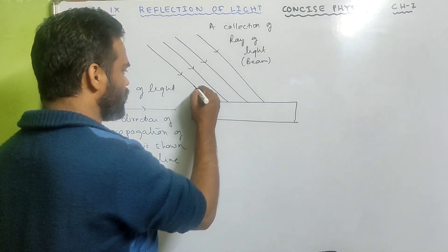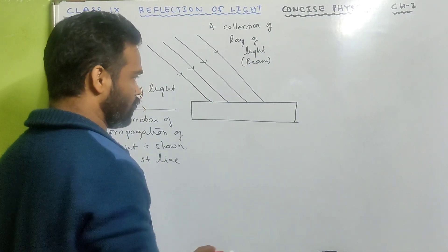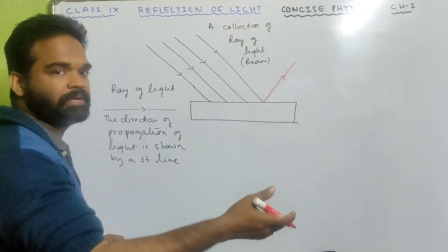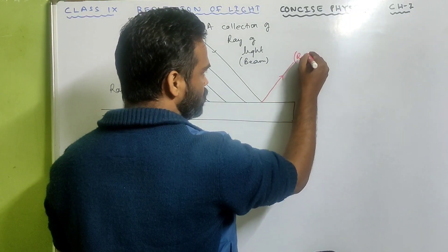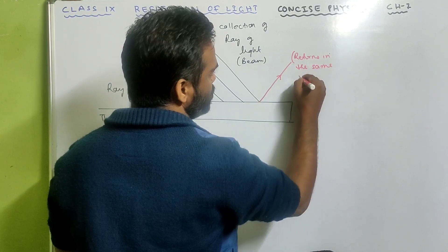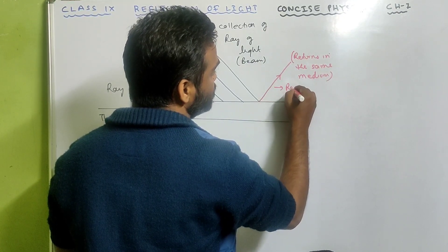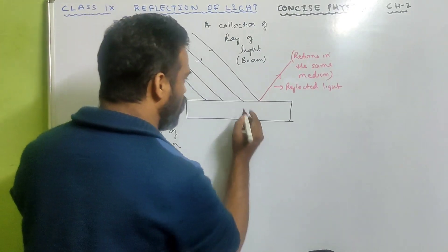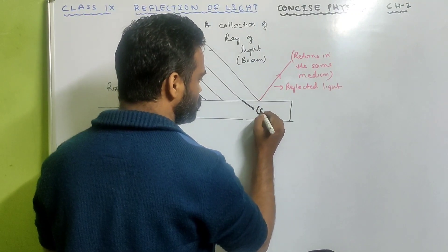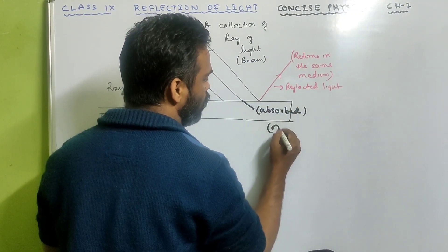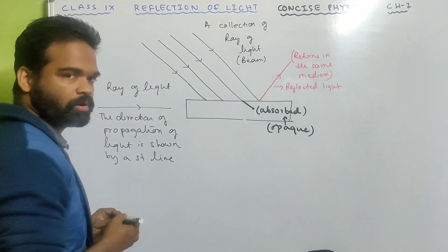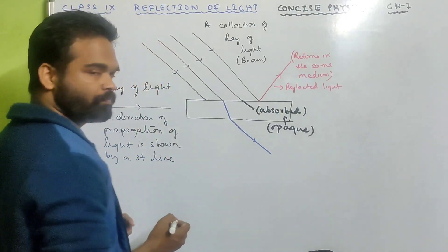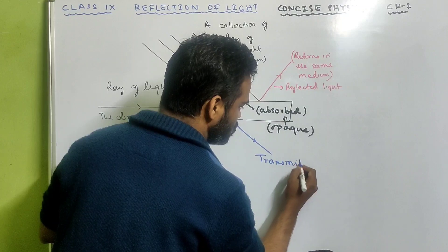Now, when a beam of light strikes a surface, a few things will occur. A part of light gets reflected in the same medium — it returns back — and that is known as reflected light. A part of it is absorbed by the medium, especially if the medium is opaque. And a part of light is transmitted.